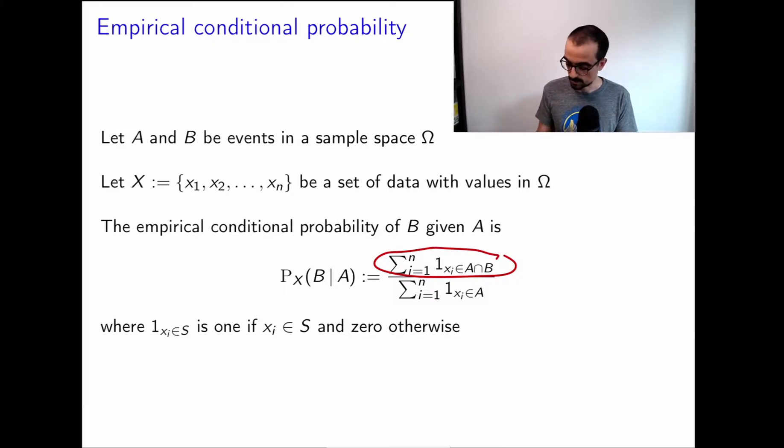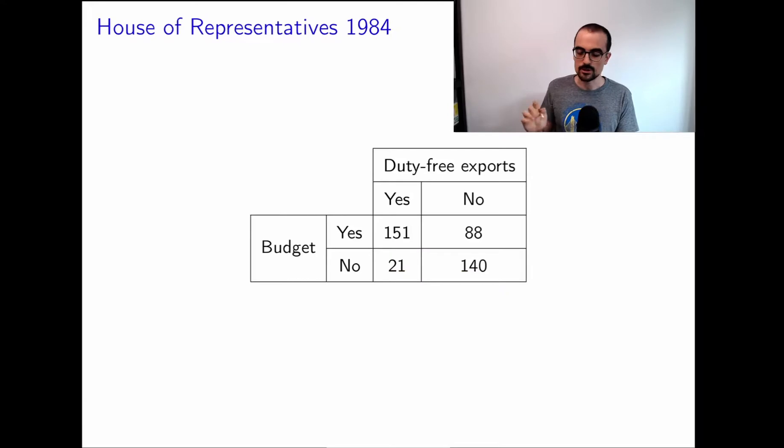The count of the intersection divided by the count of the event that we're conditioning on, that's the empirical conditional probability of B given A. Again, also very simple. Look, I've just realized, because I change notation sometimes to try to make things easier, I was going to say this is a typo, but it's not a typo, right? Because here what I've done is I've said that this is one if Xi is equal to S, where S can be A or B. So this was not a typo. I was going to ask you to forgive me and let's move on because I don't want to re-record. But anyways, let's move on.